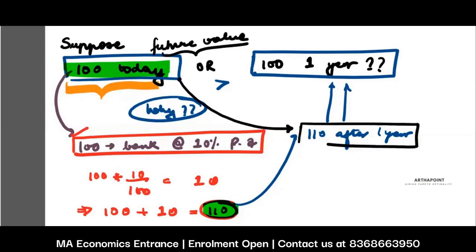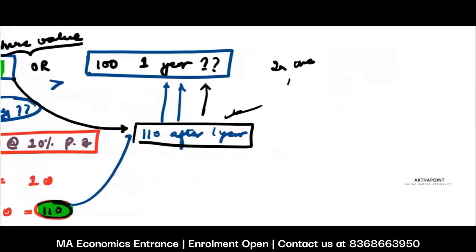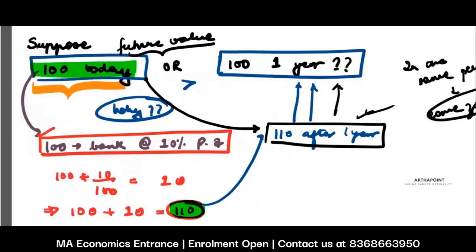When I compare this with what I am getting after 1 year, it's clear that I want 100 today. So whenever you have to compare two values, they have to be in the same period — the same zone. I cannot directly compare 100 today with 100 after 1 year. I can compare 110 after 1 year with 100 after 1 year. So I have to bring today's value to the future period — that's called future value.